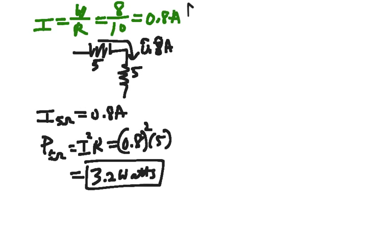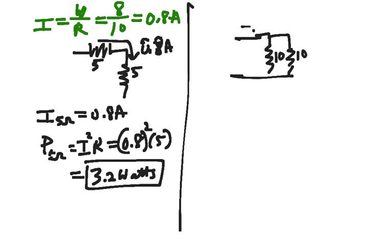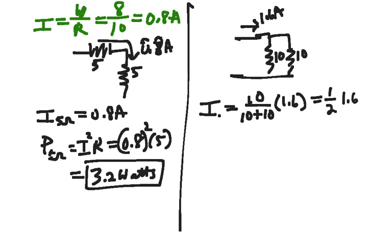And that is one way to do this problem. We could also have realized when we had the situation where we have those two tens in parallel with 1.6 amps coming in to that junction, we could use current division to figure out the current in the 10 ohms. And like we used the intuition to do this before, but we actually have an equation for this. The current in the first resistance is equal to the opposite resistor, 10, over the sum of the two, 10 plus 10, times the current going in, which is 1.6 amps. And that will give us in this case 1 half times 1.6 or 0.8 amps. And then we can proceed in the same way as we did before. So that just proves the same idea. 3.2 watts, that's our answer for this problem.